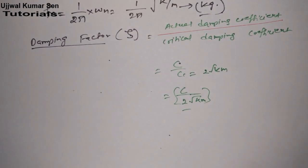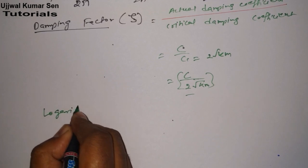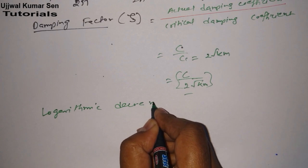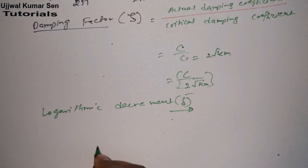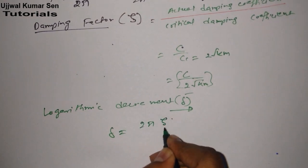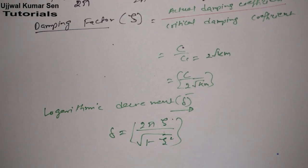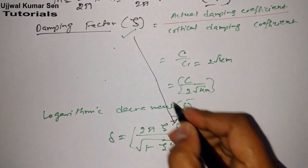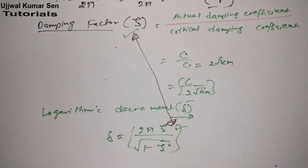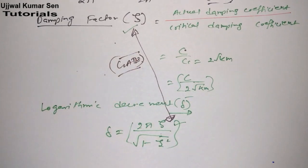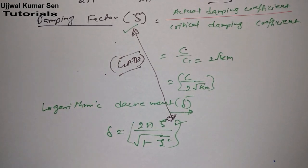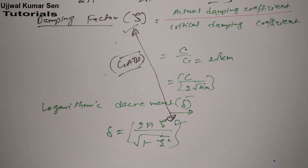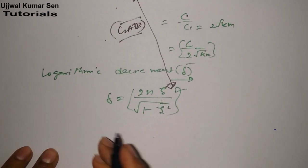Now let's move to the next — logarithmic decrement. This is denoted by delta (δ). δ = 2πζ / √(1 − ζ²). Now here, depending on the question, you have to make a relation using zeta. Understanding the relation between formulas makes things quite easier for you to solve numerical problems in GATE.